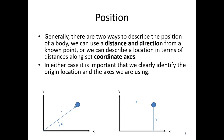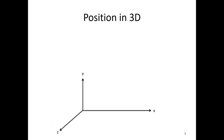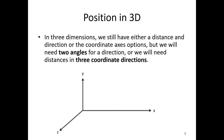When drawing diagrams in engineering mechanics, it's important to always include your axes — what you're using to describe position, and later velocity and acceleration. In 3D, we still have the distance-and-direction or coordinate-axes options, but we'll need two angles for a direction: r with angles theta and phi. Or in coordinate axes, we use distances in the x, y, and z directions. So three bits of information are needed for a position in three dimensions.